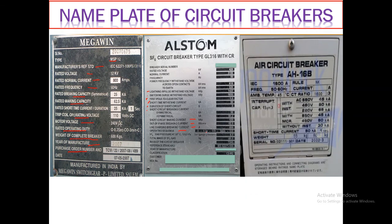For air circuit breakers, the interrupt capacity is shown in symmetrical form, with and without instantaneous MCR. These are the specifications typically observed in air circuit breakers, SF6 circuit breakers, vacuum circuit breakers, and so on.